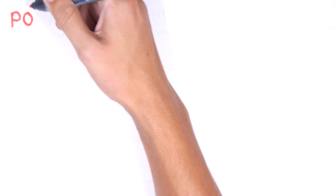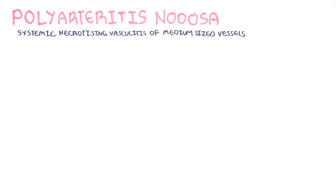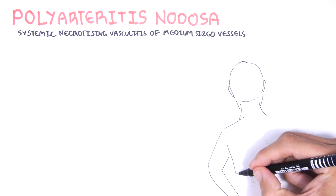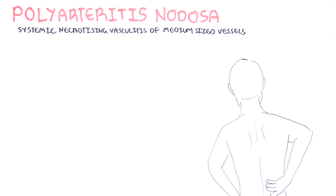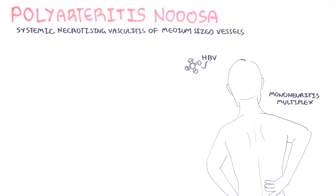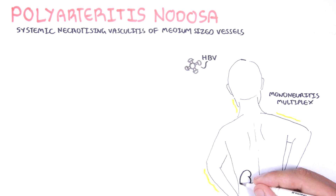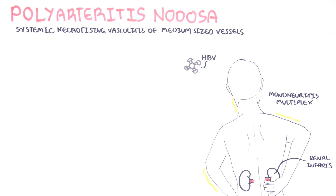Polyarteritis nodosa is a rare systemic necrotizing vasculitis targeting medium-sized arteries, with distinct features and particular involvement of the renal and visceral arteries. It is associated with hepatitis B virus, mononeuritis multiplex, and renal infarction. There is no involvement of the lungs, eosinophils are usually normal, and there is absence of anti-neutrophilic cytoplasmic antibodies.